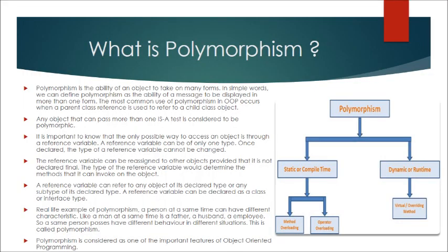What is polymorphism? Polymorphism is the ability of an object to take on many forms. In simple words, we can define polymorphism as the ability of a message to be displayed in more than one form. The most common use of polymorphism in OOPs occurs when a parent class reference is used to refer to a child class.